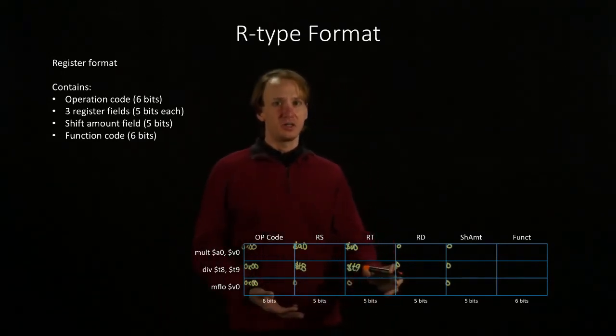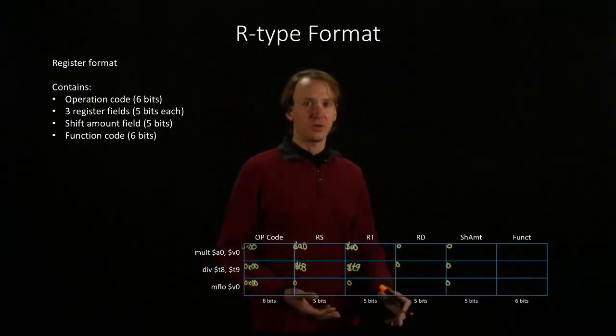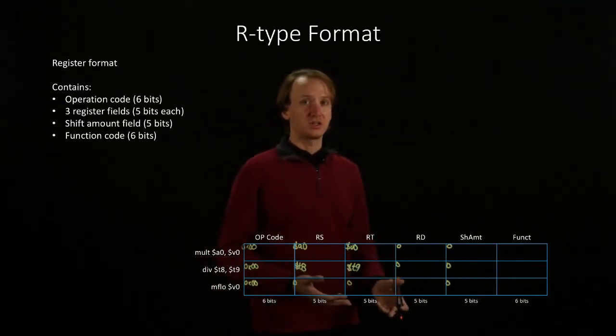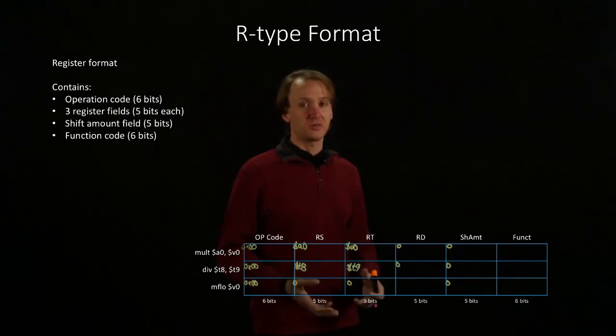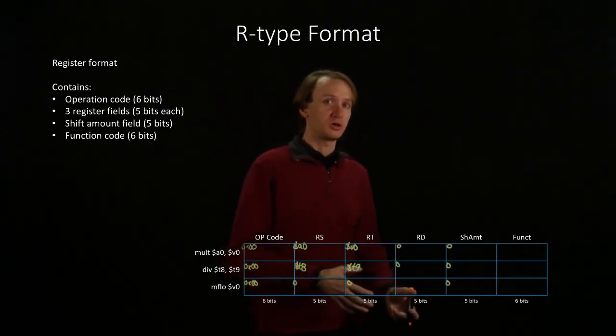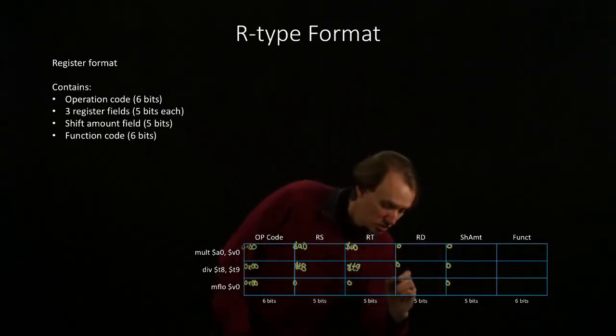And then I have the RD field. The RD field will tell me where my destination is, where the processor should put the information that it pulls out of the low register. In this case, I want it to go into v0.